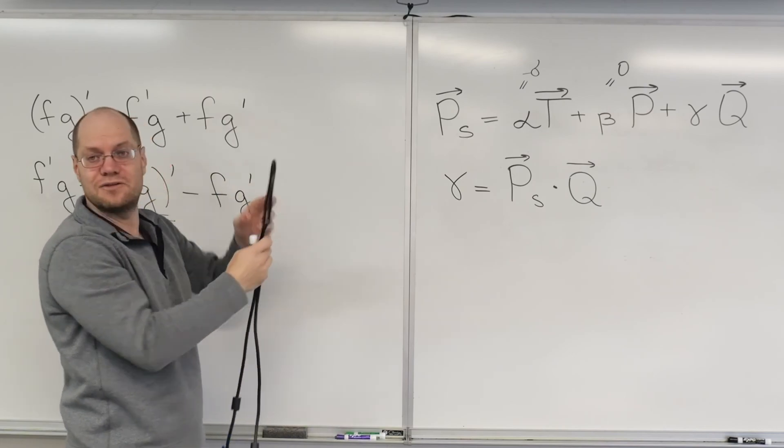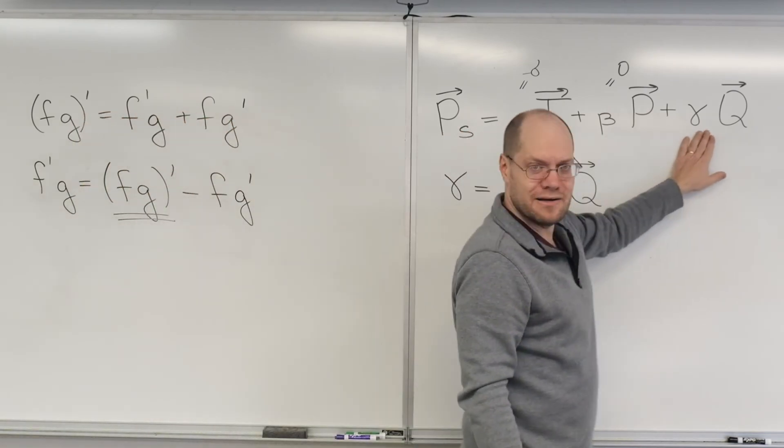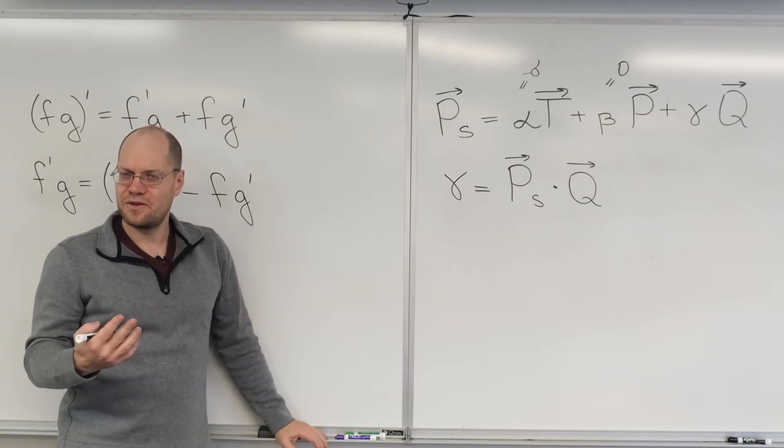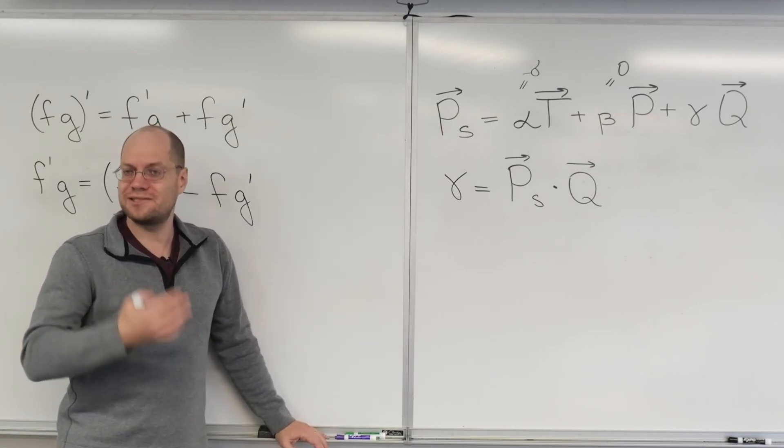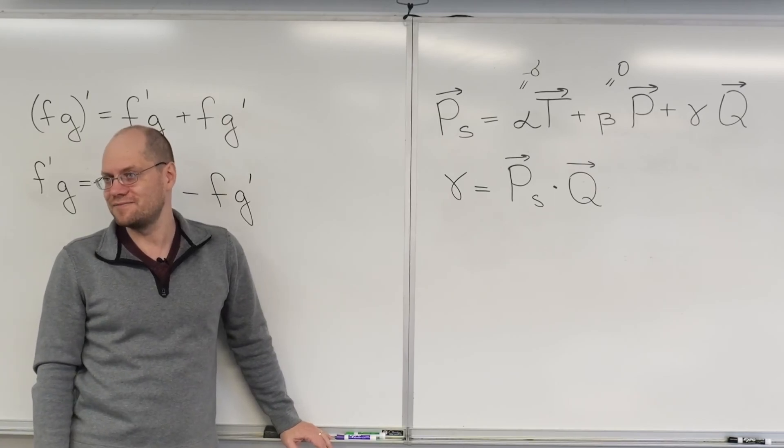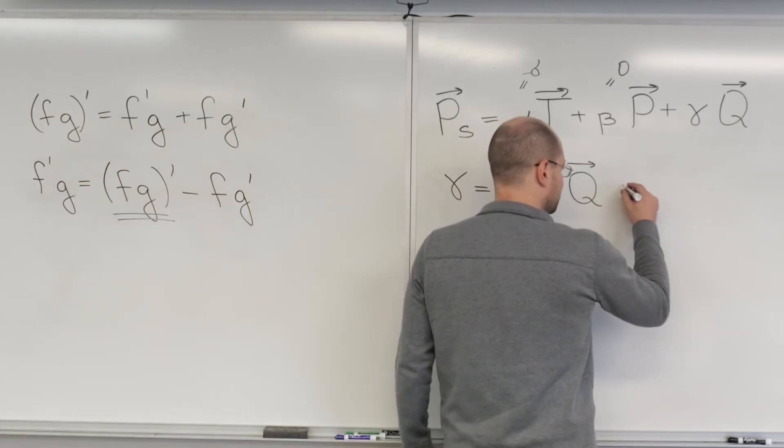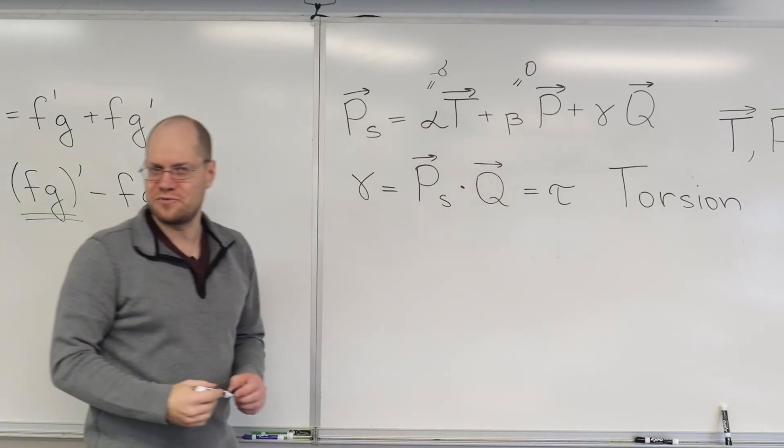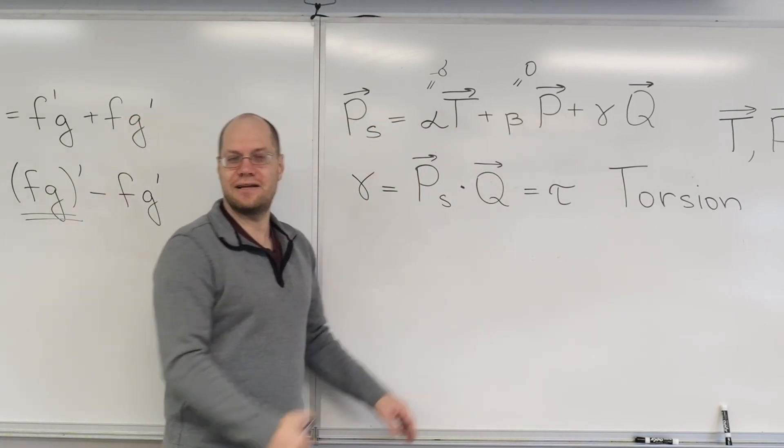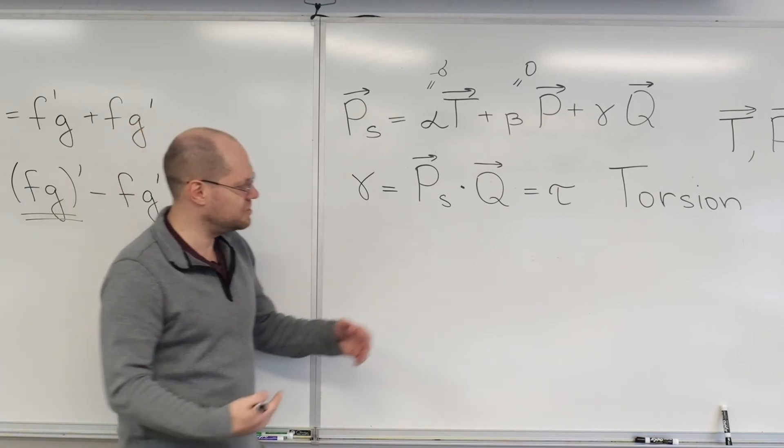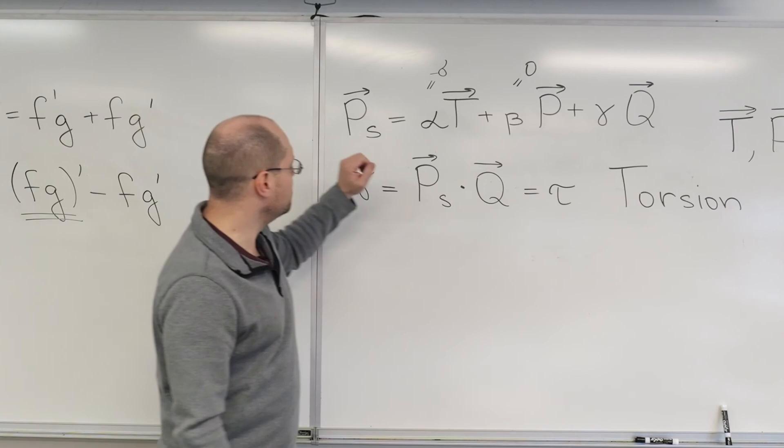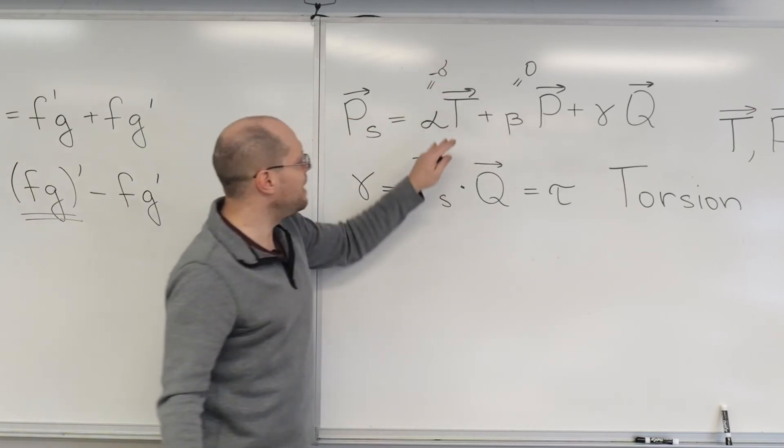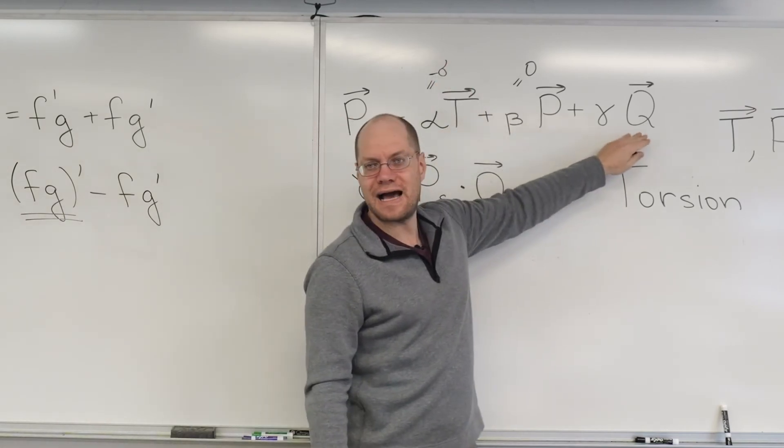So we'll once again turn things on their head and say that gamma, whatever it ends up being, for any particular curve, is the measure of the rate at which the curve twists out of its osculating plane. Does that make sense? And the letter that's used for it is tau. The term that's used for it is torsion. And this is the definition of torsion. Once again, we start with our intuition and turn that into the definition. So it becomes kind of a primary notion. So what we have is that P, the derivative of the principal normal, is minus, minus sigma T plus tau Q.